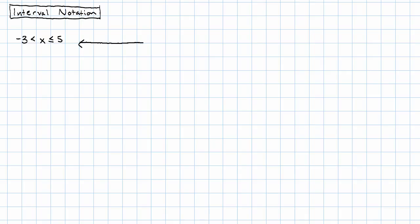Which looks like this on a number line, has all of these numbers in between negative three and five as solutions.